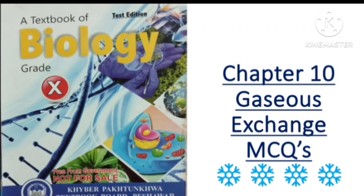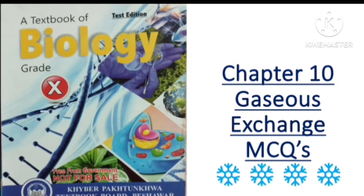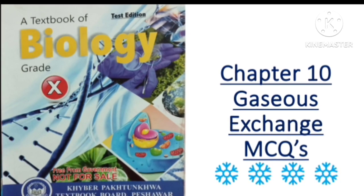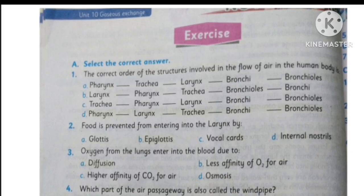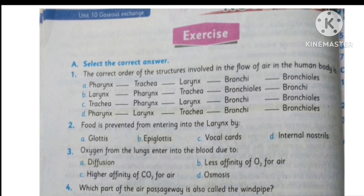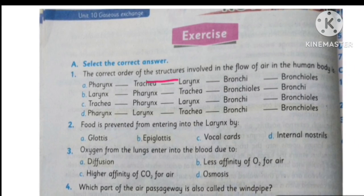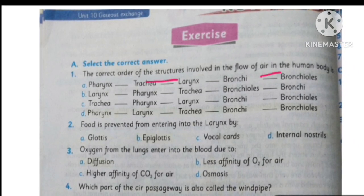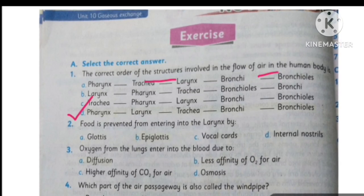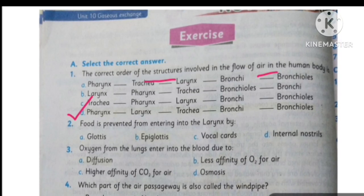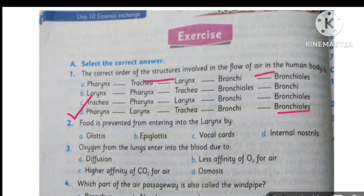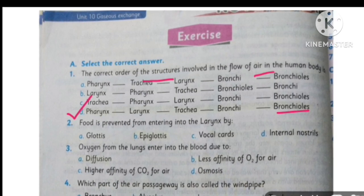Assalamualaikum dear students, today I'm going to discuss the MCQs of chapter number 10, which is Gaseous Exchange. The first MCQ is: what is the correct order of structures involved in the flow of air in the human body? The correct option is D — first it comes pharynx, then larynx, trachea, bronchi, and bronchus.